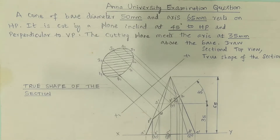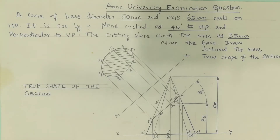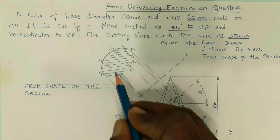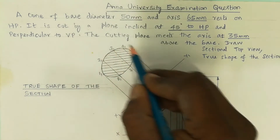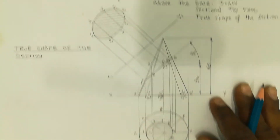Draw the sectional top view and true shape of the section. This is from the previous university examination question paper. The question is related to the subject called engineering graphics, common to all branches of engineering and technology, studied in first year. So in sectional solids, this will be a detailed explanation of how to draw the sectional top view and true shape of the section.